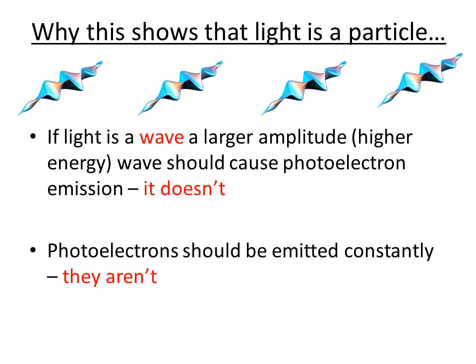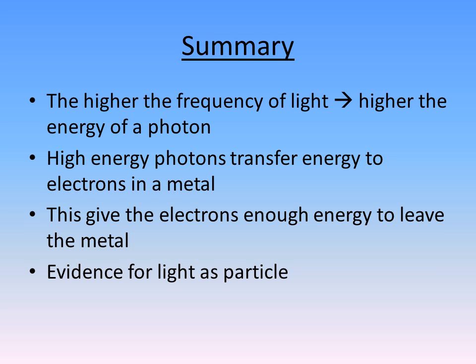If light were a wave, photoelectrons should be emitted constantly, but they aren't. You would think waves would continuously dump energy onto the metal, saving up enough energy to release photoelectrons — like filling up a glass until it overflows — but they don't. So this is very good evidence for light as particles. In summary: the higher the frequency of the light, the higher the energy of the photon per Max Planck's equation. High energy photons transfer energy to electrons in a metal, giving them enough energy to leave — and that is great evidence for light as a particle.